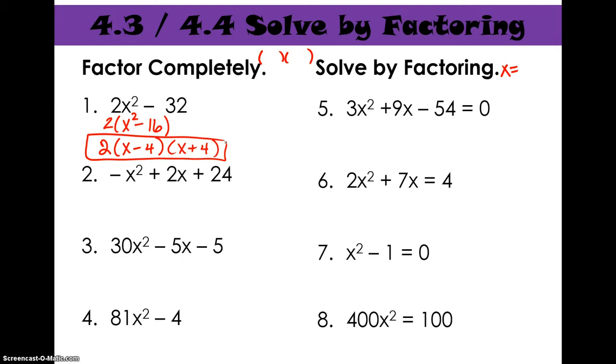Number two is three terms. No GCF. But we have this negative out front, and we can't factor with a negative out front. So we're going to take it out. It's kind of like a GCF. We're going to take out the negative one, which leaves us with x squared minus 2x minus 24. Now we can go ahead and factor. This is three terms. It's a leading coefficient of one. So this is a multiply add. We're going to multiply to be negative 24, add to be negative two. Feel free to pause and attempt these on your own before seeing my demonstration. So that's x and x. It's six and four. We want a negative six and a positive four. Really important that you don't forget to keep that negative out front.